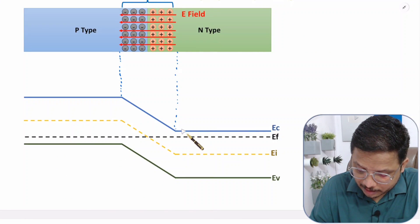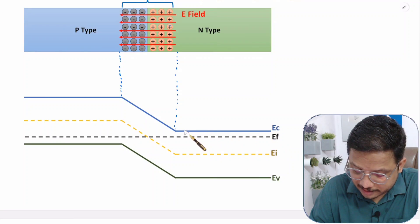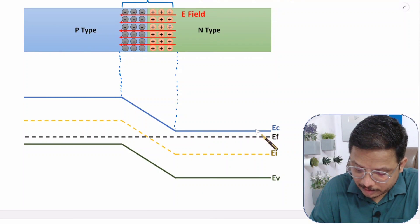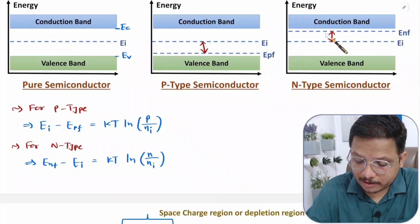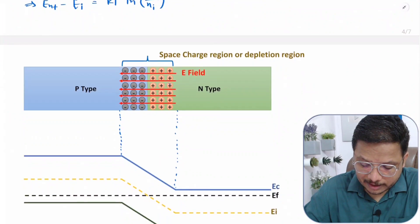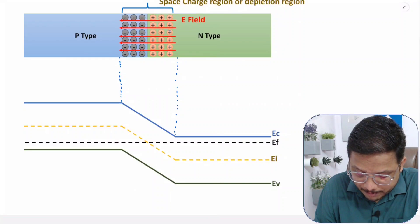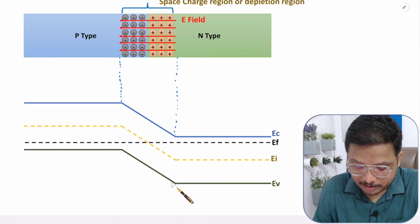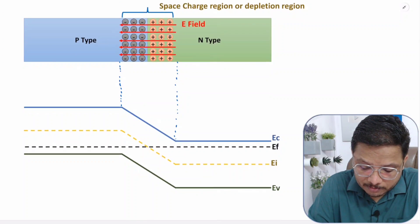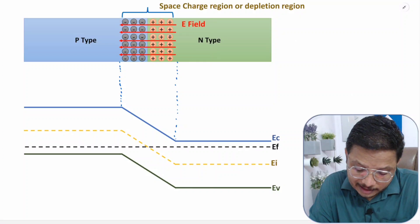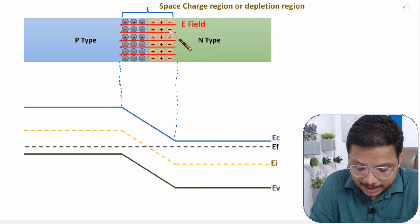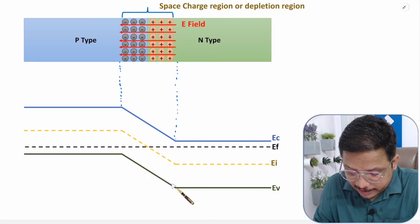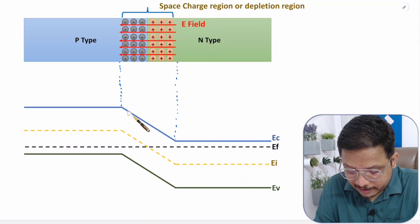Over here, if you observe, this is N-type. So in that Fermi energy is nearer to conduction band. Now you might be thinking, why is there a band tilt in this energy band diagram? That band tilt is coming because of the electric field. As electric field is there in this direction, this band is getting tilted like this.